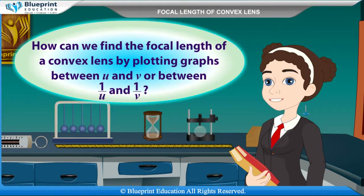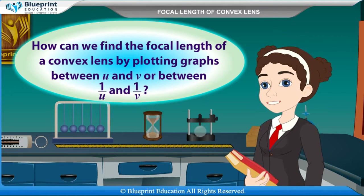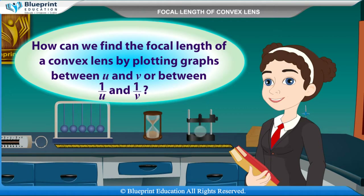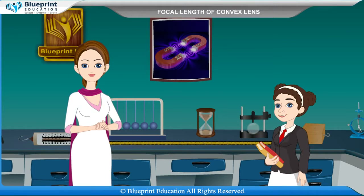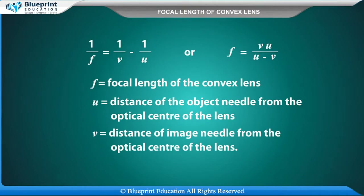A student asks: how can we find the focal length of a convex lens by plotting graphs between U and V or between 1/U and 1/V? The relation between U, V, and F for a convex lens is given by: 1/F = 1/V − 1/U, or equivalently F = VU / (U − V).